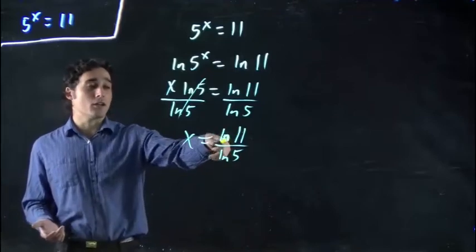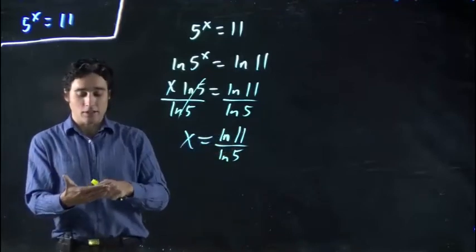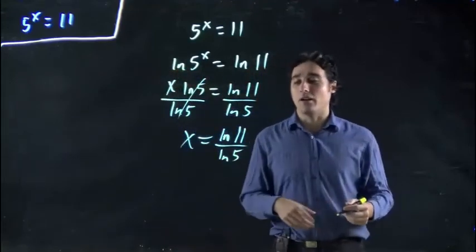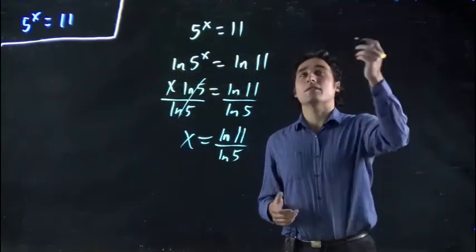You'd find your answer just by going ln of 11 in your calculator, punch it in. I don't know what that is off the top of my head. You punch it in your calculator, find out. Divide that by ln 5. And this would be the same as if I used log.